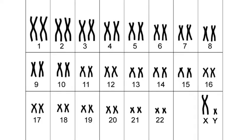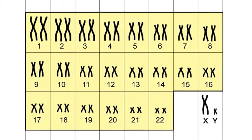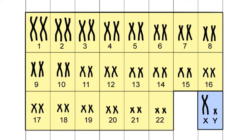Human diploid cells contain 23 pairs of chromosomes, or 46 chromosomes in total. 44 of these chromosomes are known as autosomes that can be placed into 22 matching or near-identical homologous pairs. In addition, there is one pair of sex chromosomes.